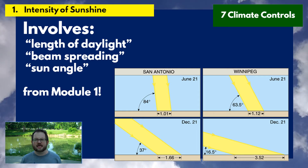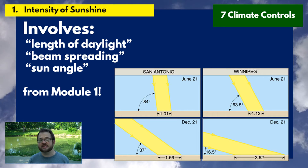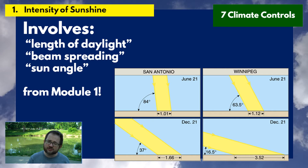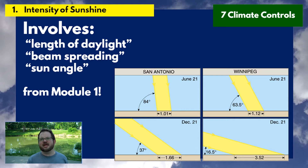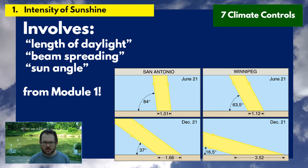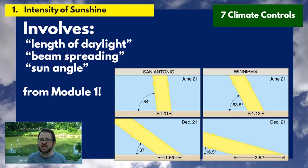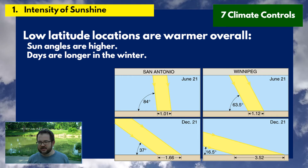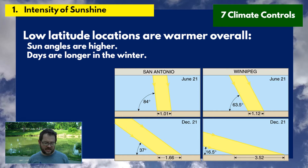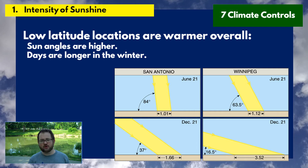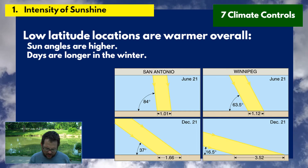We can look at examples like the differences in Sun angles between San Antonio, far to the south in Texas, versus Winnipeg in Canada. On given days, Sun angles differ, and therefore beam spreading differs. This isn't exactly rocket science — obviously a location tends to be warmer the closer to the equator it is. Lower latitude means warmer climate, primarily because Sun angles are higher, and in winter, days are also longer than at higher latitudes.